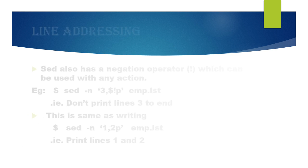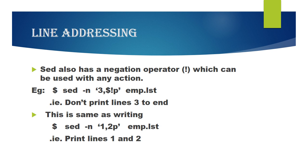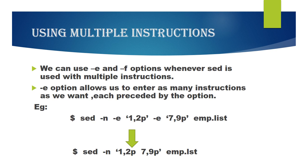SED also has a negation operator which can be used with any action using multiple instructions. We can use E and F options whenever SED is used with multiple instructions. E option allows us to enter as many instructions as we want, each preceded by the option.